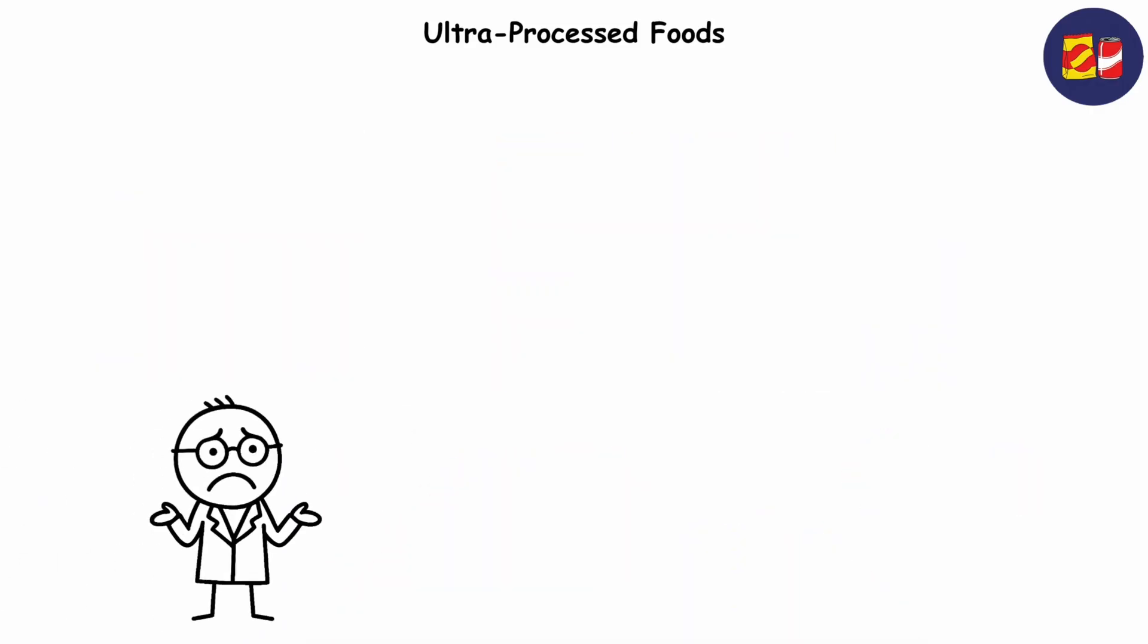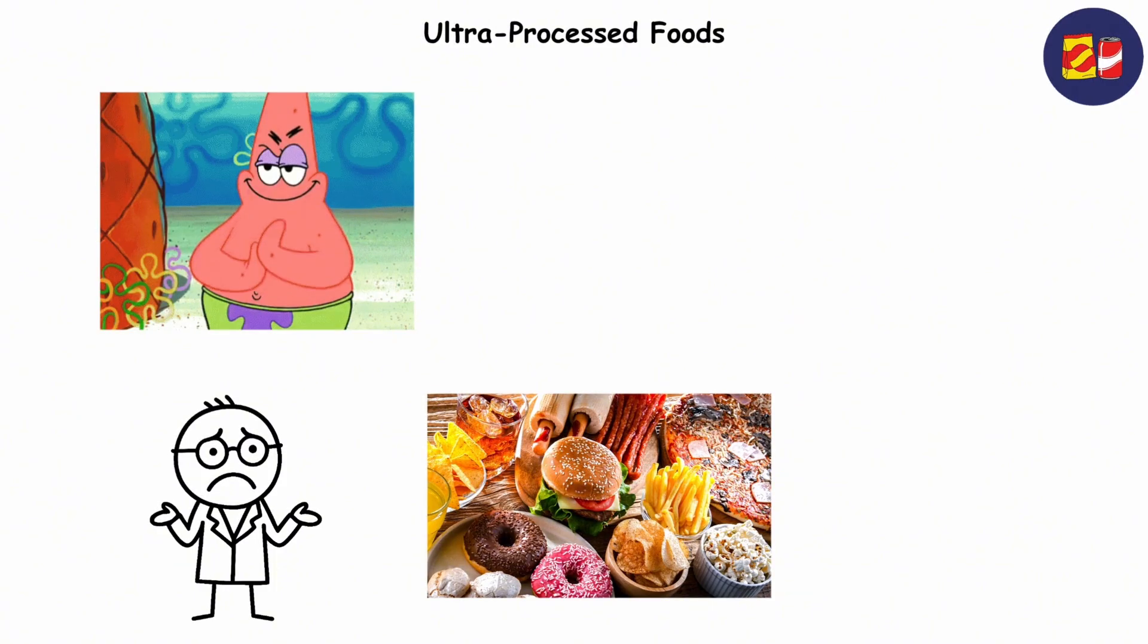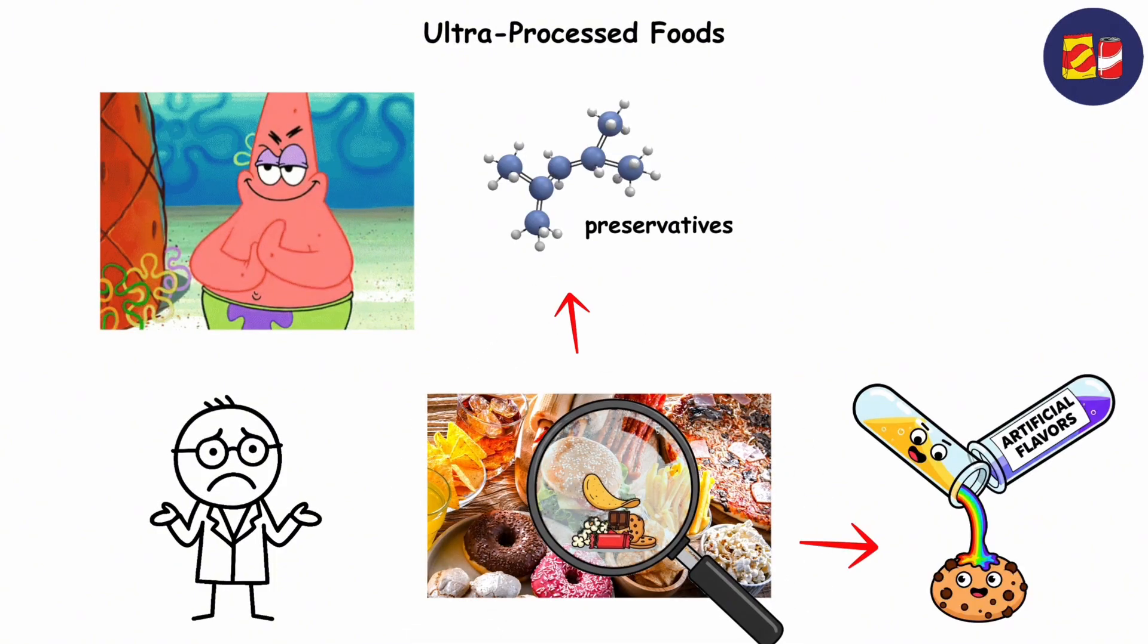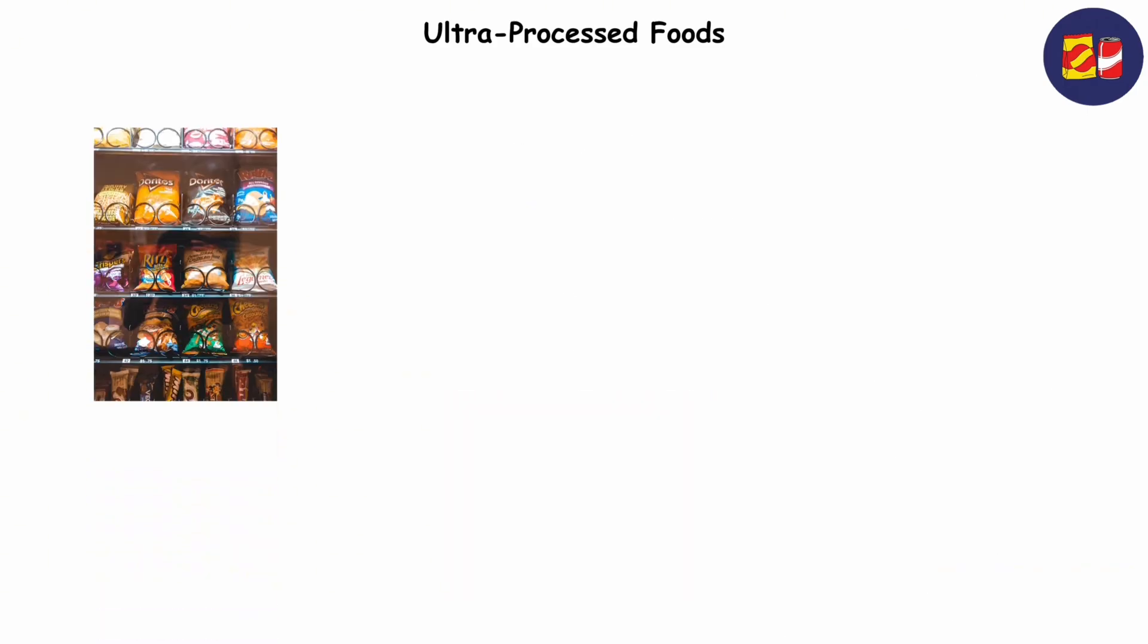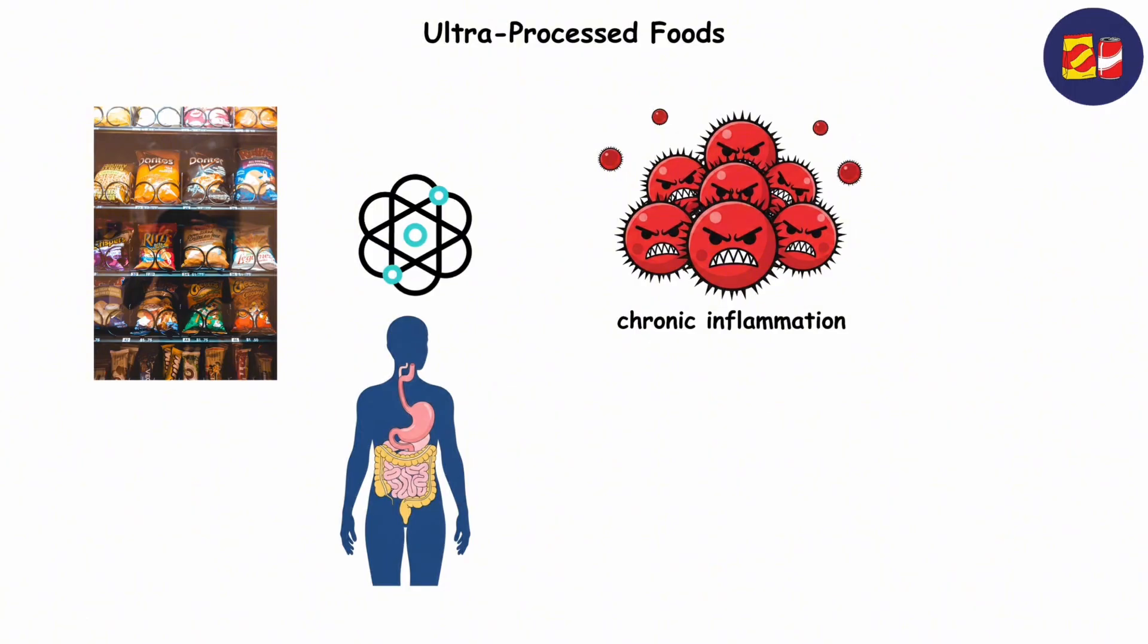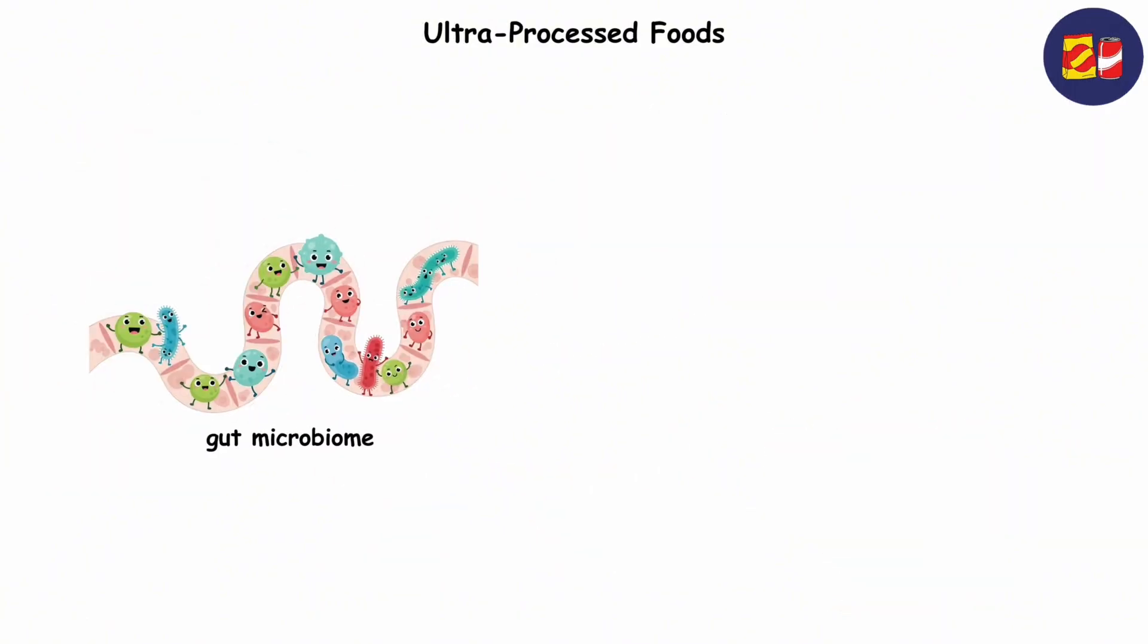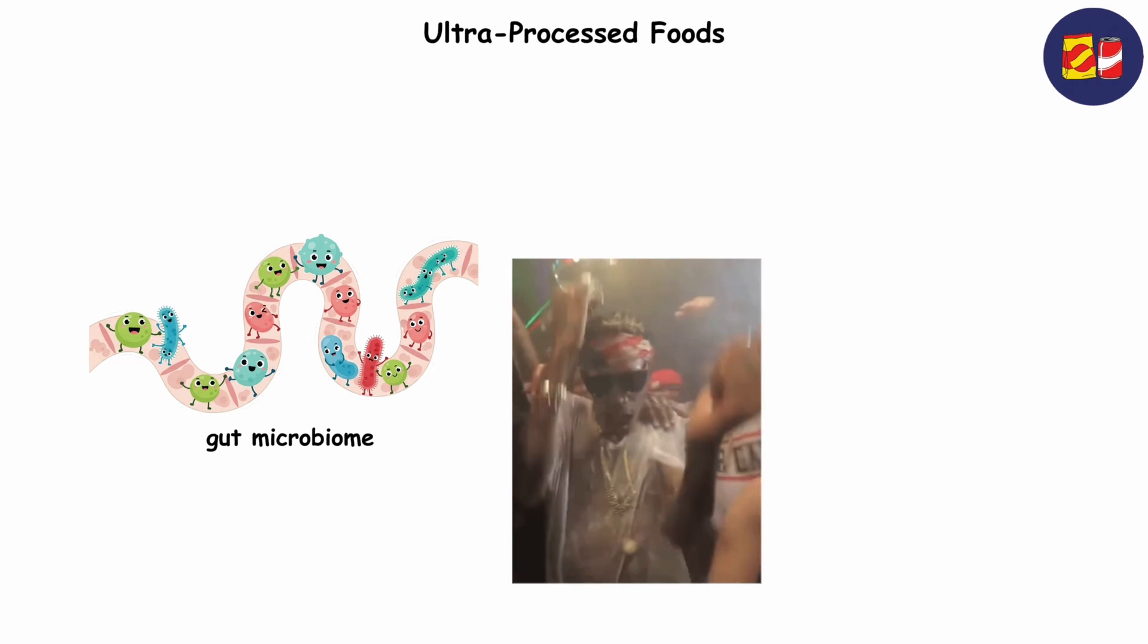But here's the problem with those ultra-processed snacks. They're like tiny pranksters. Ultra-processed foods are anything packed with preservatives, artificial flavors, and ingredients you can't pronounce without a chemistry degree. When you eat a lot of these, your body reacts. Chronic inflammation kicks in. Think of it like your immune system stuck in angry mode. Your gut microbiome, the friendly bacteria partying in your intestines, also gets disrupted.